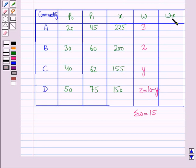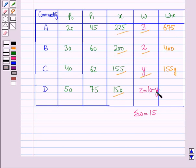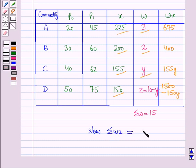In the W into X column: 225 into 3 is 675, 200 into 2 is 400, 155 into Y is 155Y, and 150 into (10 minus Y) is 1500 minus 150Y. From the table, summation of W into X equals 2575 plus 5Y.